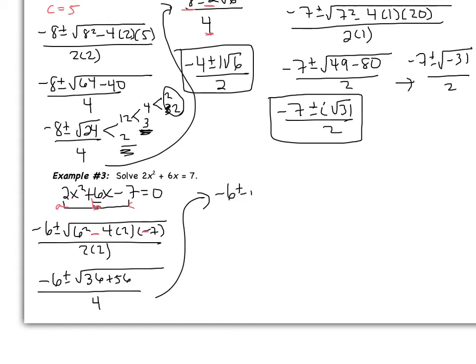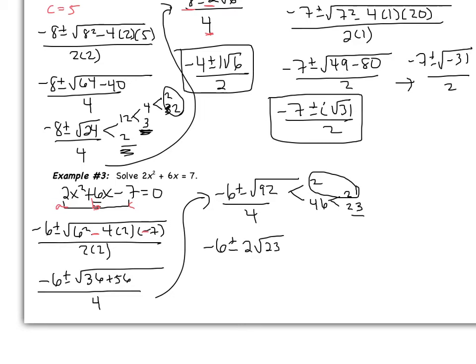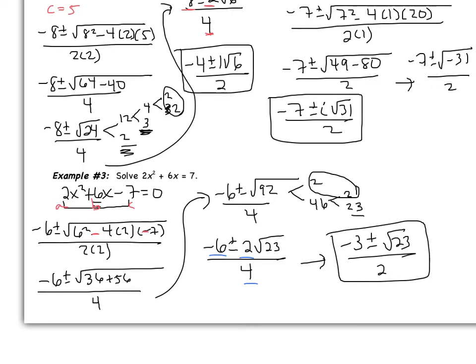This becomes negative 6 plus or minus the square root of 36 plus 56, all over 4. Note: 4 times 2 is 8, and 8 times 7 is 56 — it's positive 56 because we have a negative c and a negative sign, giving a positive. So we have root 92 over 4. Simplifying 92: 92 = 2 times 46 = 2 times 2 times 23, so a pair of 2s comes out, giving 2 root 23. Dividing 6, 2, and 4 all by 2, the final answer is negative 3 plus or minus root 23, all over 2. Be careful with those two negatives — that's likely where mistakes were made.